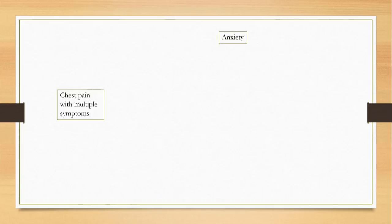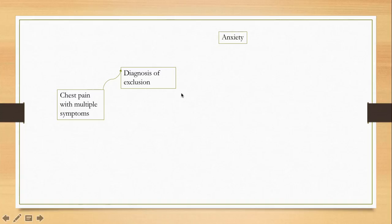The last category of causes of chest pain is psychological — specifically anxiety and panic disorder, which can definitely cause very classic chest pain. Importantly, this is a diagnosis of exclusion. Do not label anyone with anxiety until you have excluded other causes. A thorough history is essential.